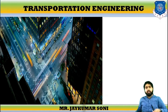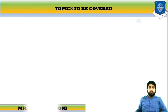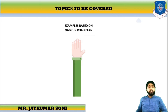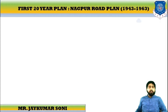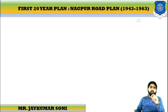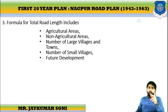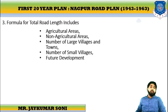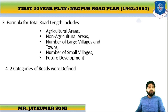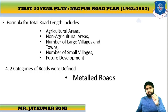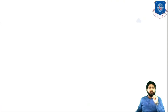Let us start the session and cover examples based on the NACU Road plan. This is the first 20-year plan. Let us revise the formula. The formula for total road length includes agricultural area, non-agricultural area, number of large villages, number of small villages, and future development. There are two categories of roads defined: metal road and unmetal road.